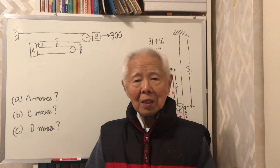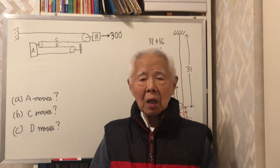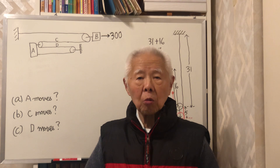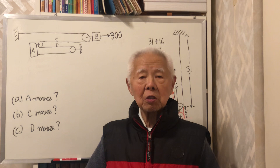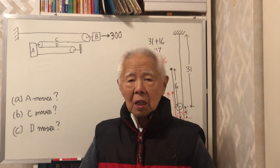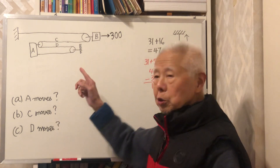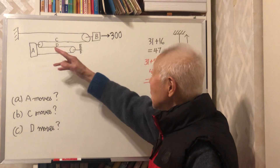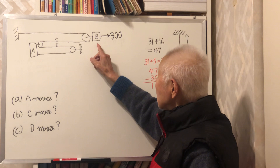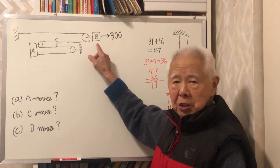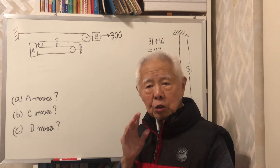Hello everybody. I have a question from a homework from Carlton University. The homework involves a pulley system where block B moves to the right-hand side by 300 units.